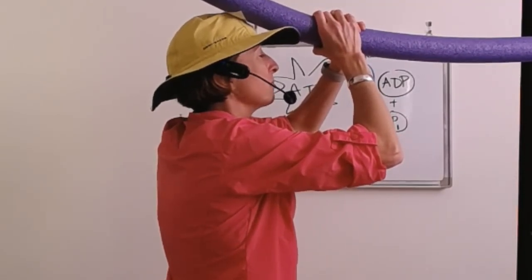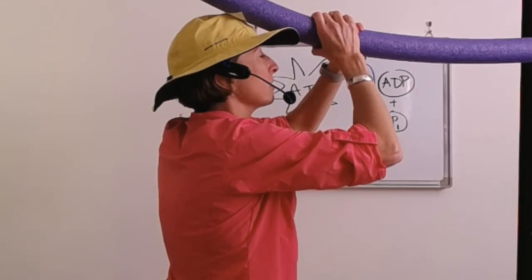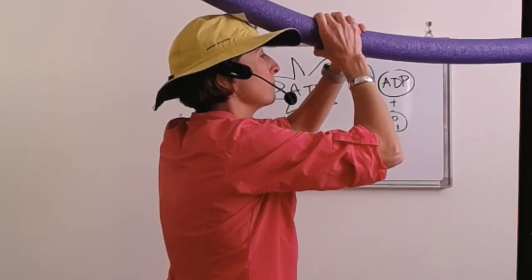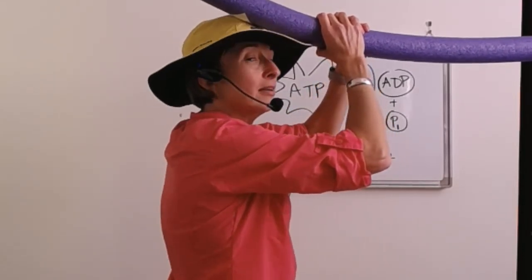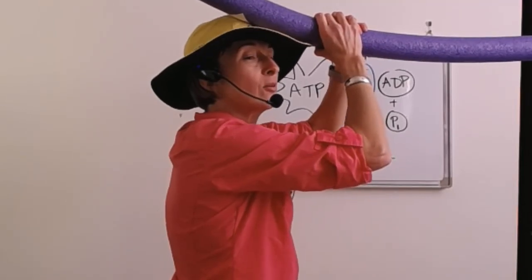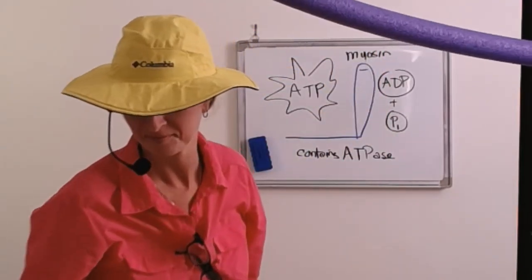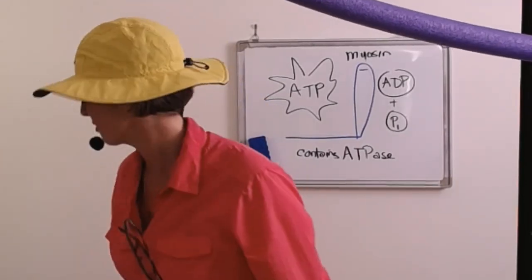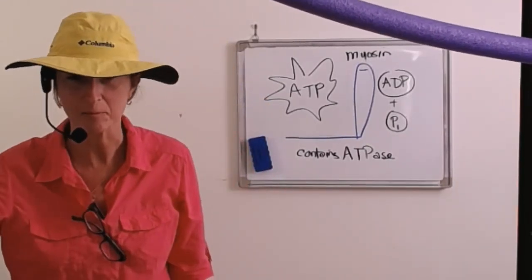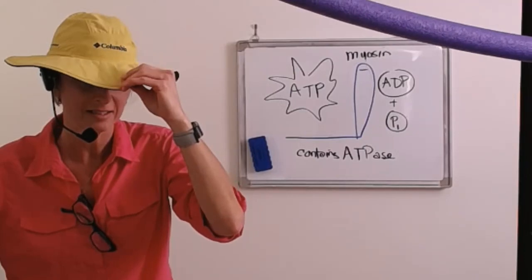What molecule do I need to break this cross bridge so that I can reset? Right. I need ATP. Somebody throw ATP my way, would you? Okay. All right. So that's it from the myosin perspective. Have a good day.